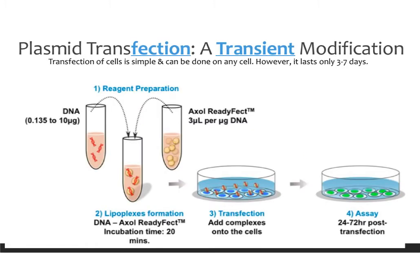Now that you've generated your plasmid, let's talk about what you can do with it. There are two ways to put it on cells. The first is transfection — a transient modification where you're essentially just dumping the plasmid onto the cells. It's very simple, can be done on almost any cell, but will only last about three to seven days. If your experiment is within this time period and you don't want to save the cells, this is reasonable. But if you want to save the cells and do a lot of experiments, it might be worth making a permanent modification.